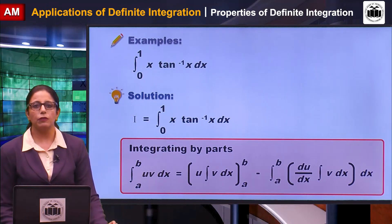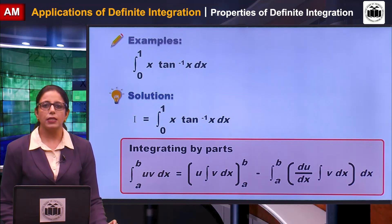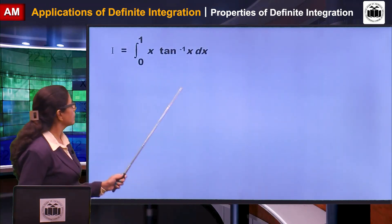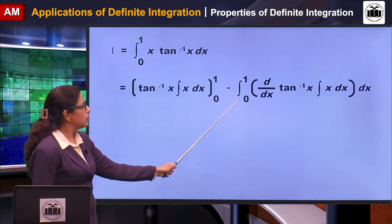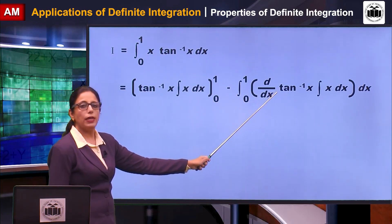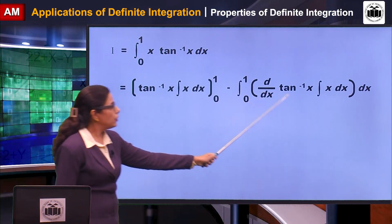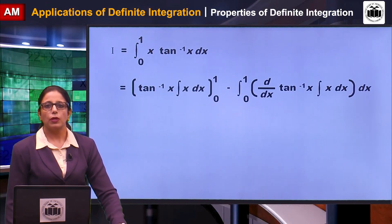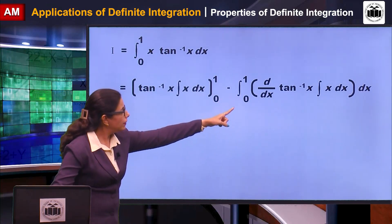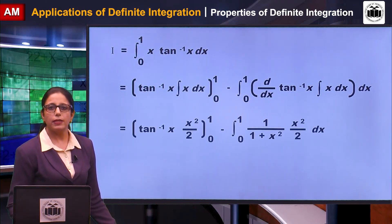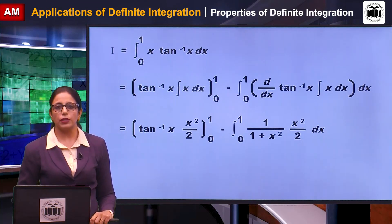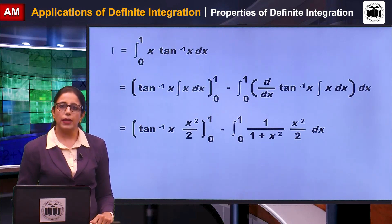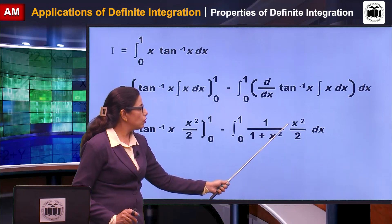Using the integration by parts formula with u = tan⁻¹x and v = x: [tan⁻¹x · ∫x dx] from 0 to 1 minus ∫₀¹ (derivative of tan⁻¹x) · (∫x dx) dx. The integral of x dx is x²/2, and the derivative of tan⁻¹x is 1/(1 + x²). Substituting these: [tan⁻¹x · x²/2] from 0 to 1 minus ∫₀¹ [1/(1+x²)] · (x²/2) dx.